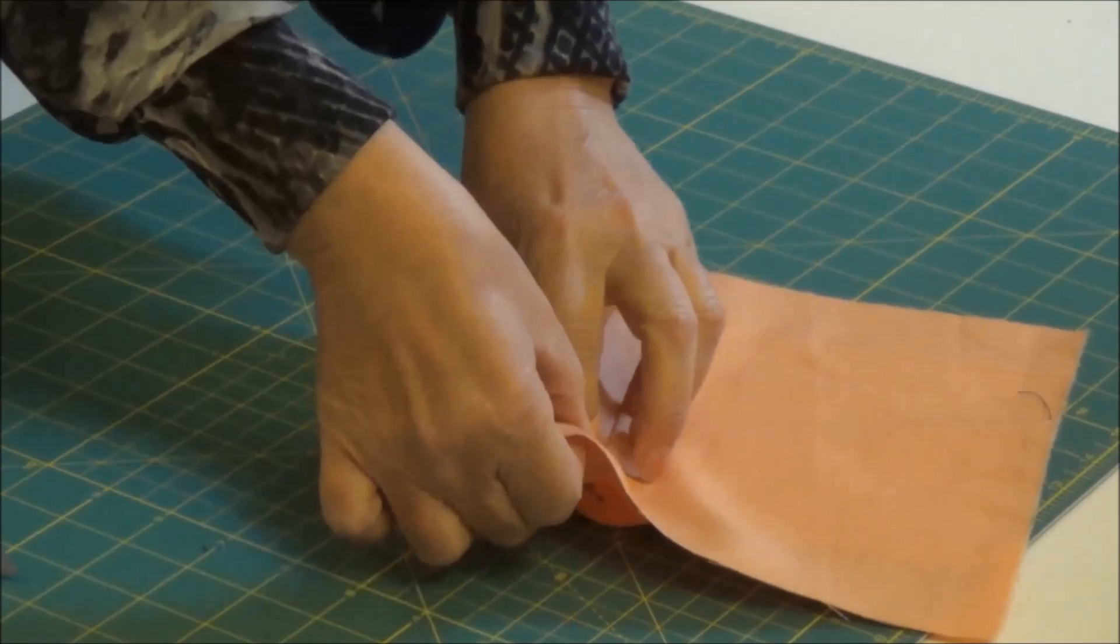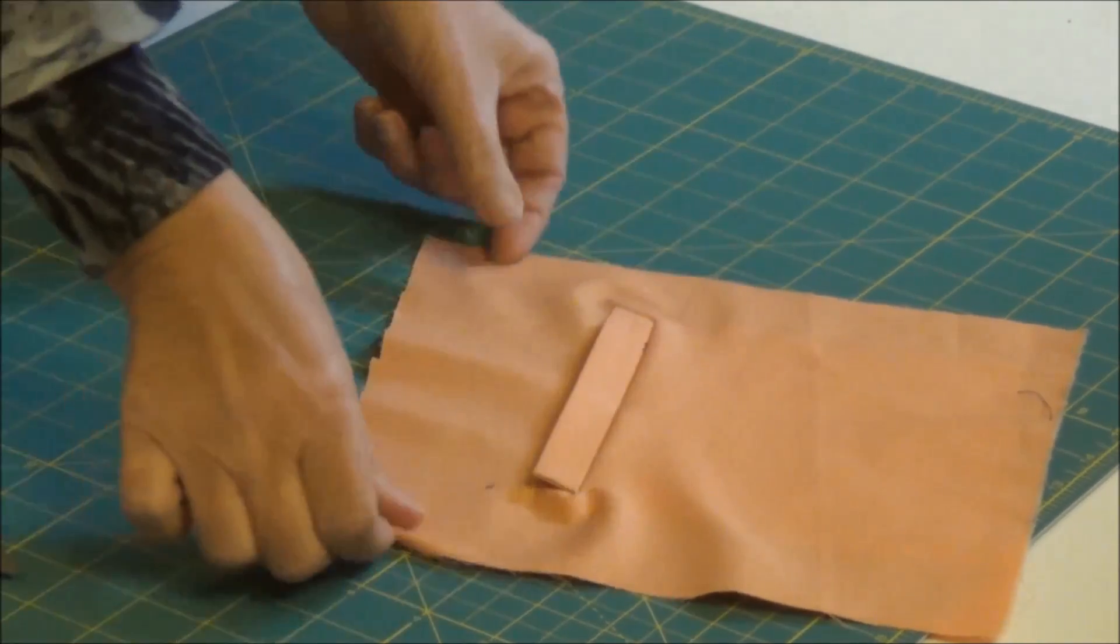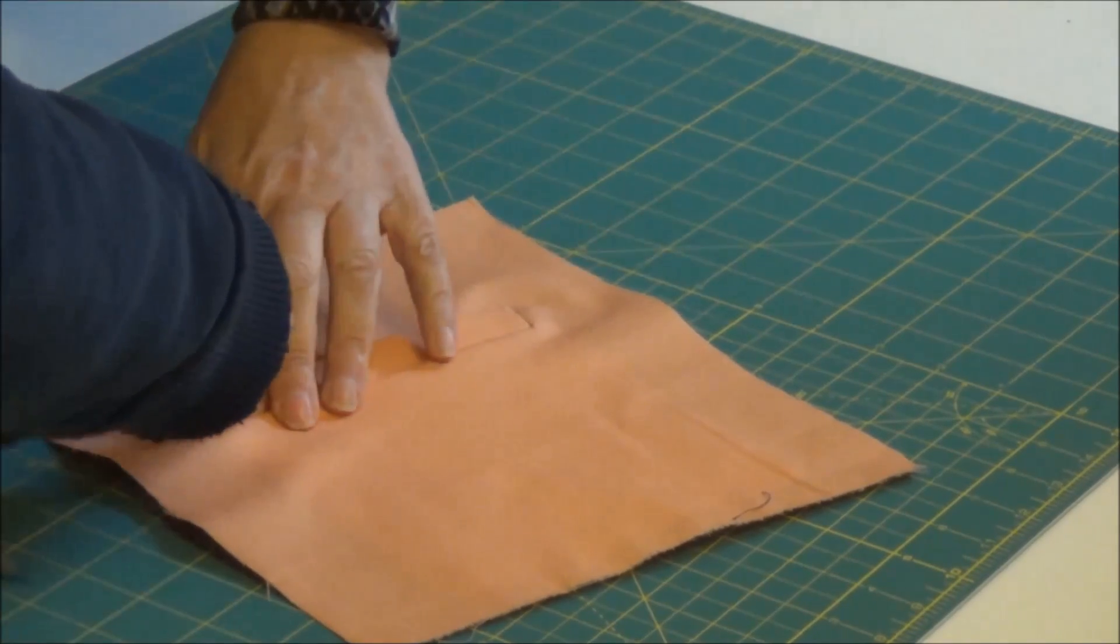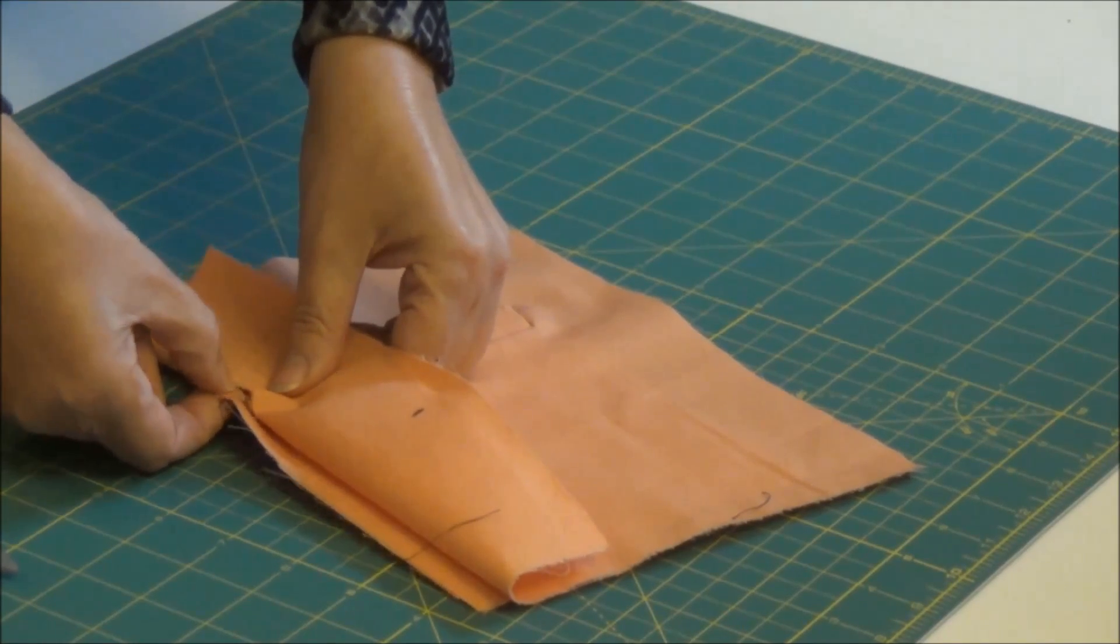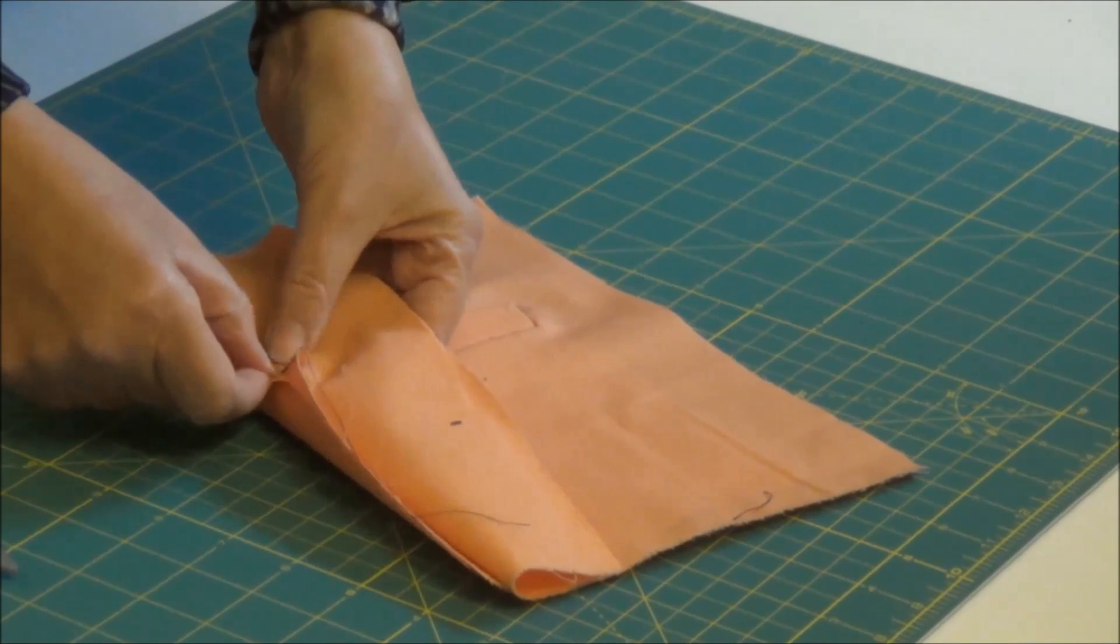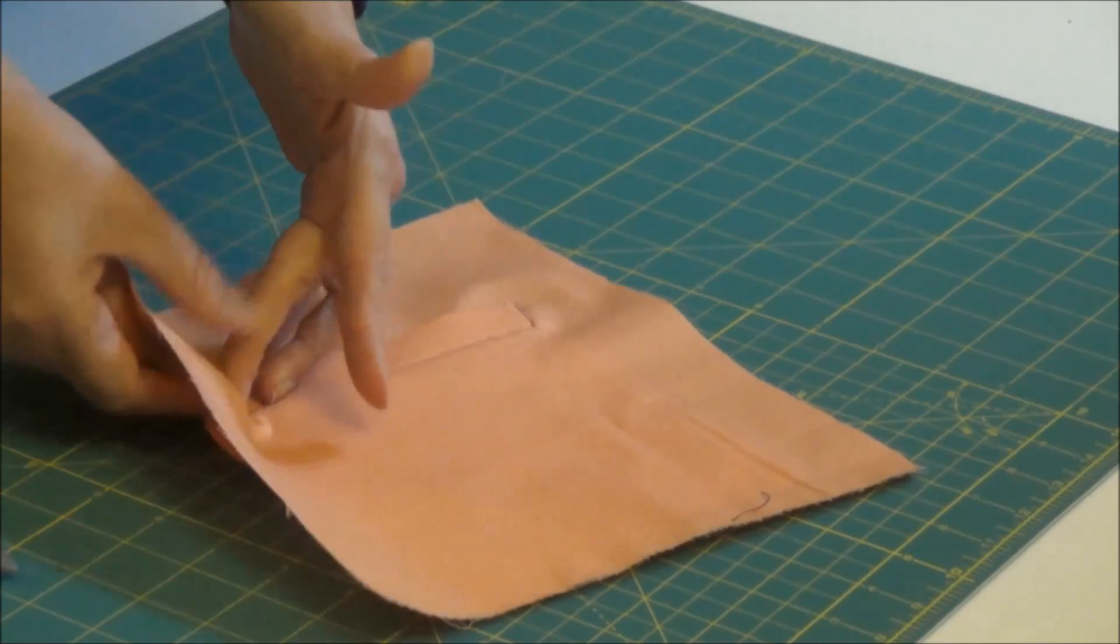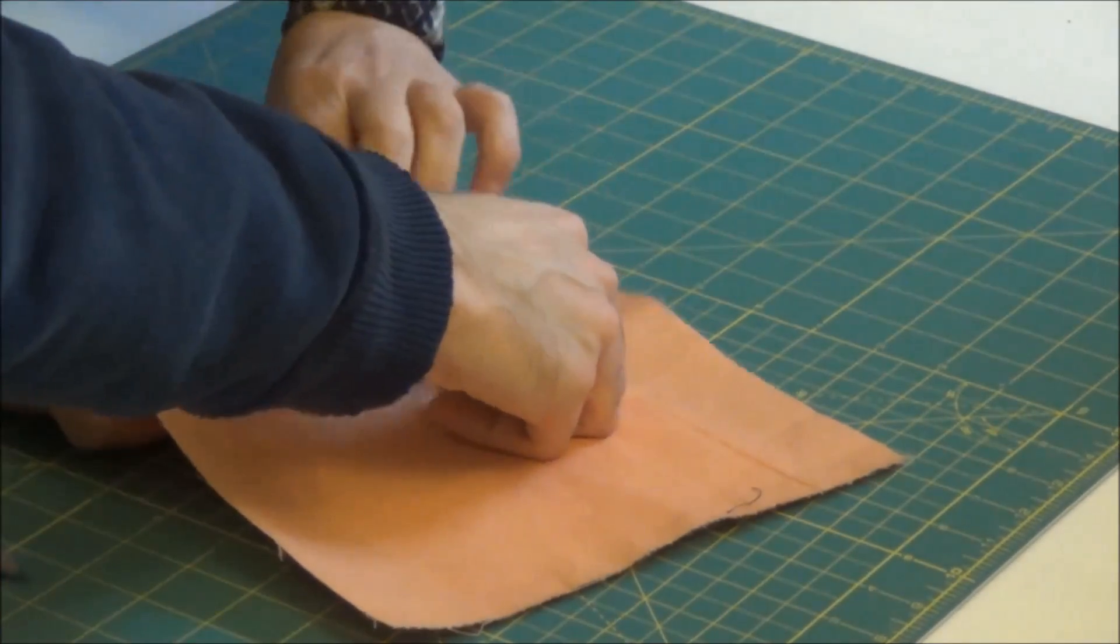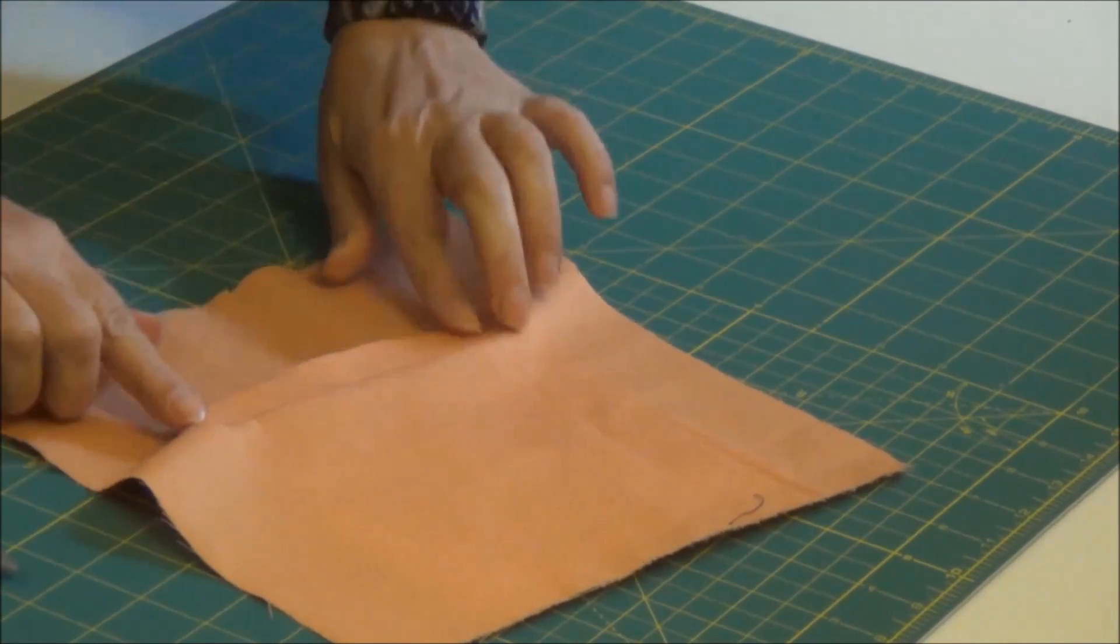Vedete, anche qui si controlla che il triangolino è dentro ed è ben sistemato. Questa è la parte interna dove si vede il triangolino, che verrà cucito insieme alla tasca, tutto intorno, in maniera tale che non può scappare, non può uscire fuori, anche perché è molto difficile prenderlo in maniera corretta con il listino. Quindi è meglio cucirlo a parte.